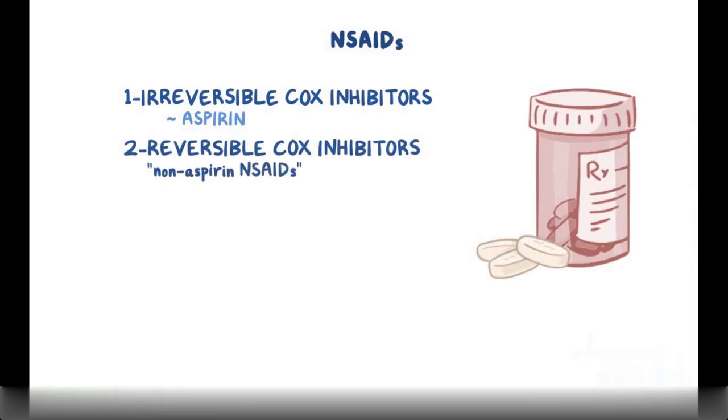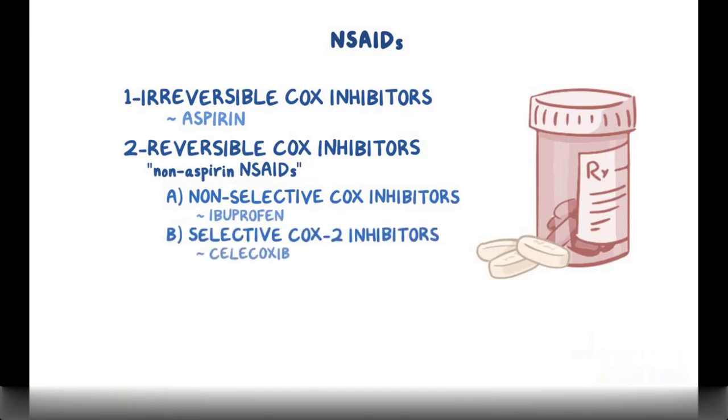Non-aspirin NSAIDs can be further subdivided into two groups: non-selective COX inhibitors, which include common medications like ibuprofen, and selective COX-2 inhibitors, like celecoxib.